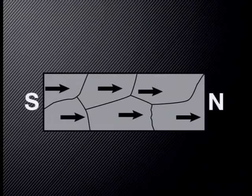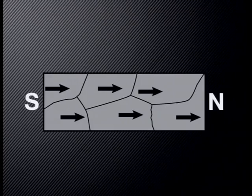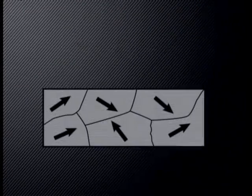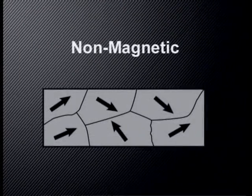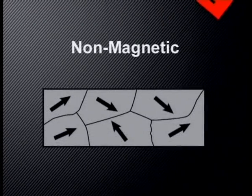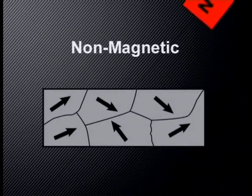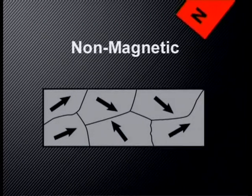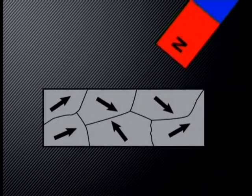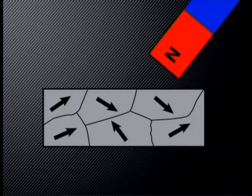We have noticed that in magnets, the magnetic domains are all aligned. In non-magnetic materials, the magnetic domains are not aligned and do not change even when a magnet is brought close to this sort of material.